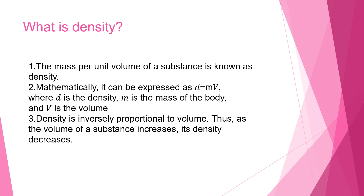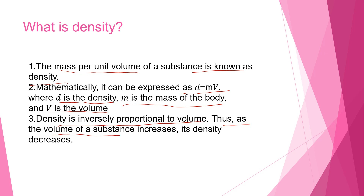First, we are going to discuss what is density. Density is the mass per unit volume of a substance. It can be expressed as D equals mass per unit volume, where D is density, M is the mass of the body, and V is the volume. Density is inversely proportional to volume — as the volume of a substance increases, its density decreases. More the volume, less the density.